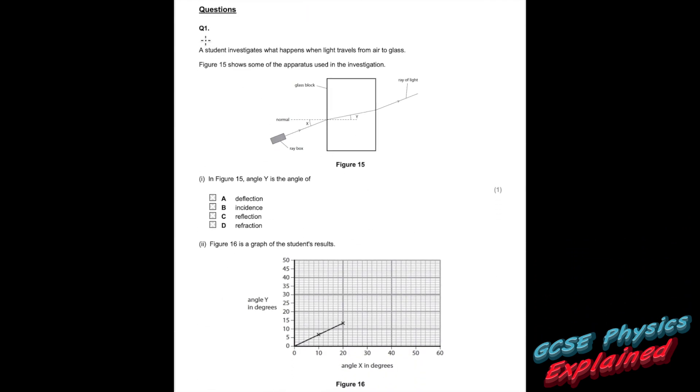Question 1. The student investigates what happens when light travels from air to glass. Figure 15 shows some of the apparatus used in the investigation. In figure 15, angle Y is the angle of refraction. X is the angle of incidence, just in case they ask you that next time.